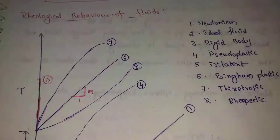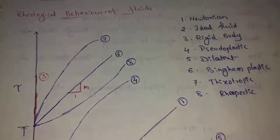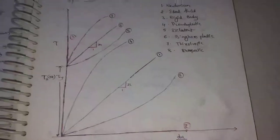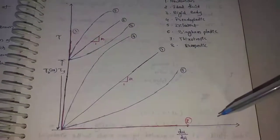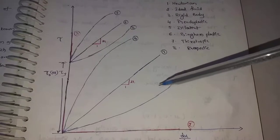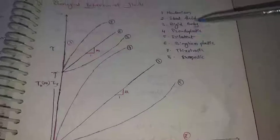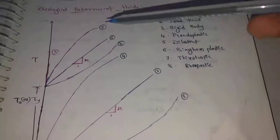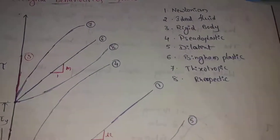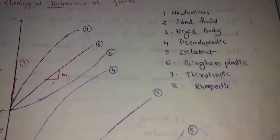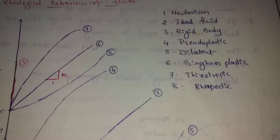Next topic: Rheological Behavior of Fluids. I have seen this diagram in a previous class, so let's take a look at it. In this diagram there are different lines and flow lines. There are 8 fluids, including ideal fluid and rigid body. We will discuss these in depth in this video, including which units are used and the values of the flow.